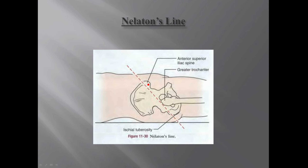Let's also discuss Bryant's triangle. Bryant's triangle is a right triangle drawn in the supine position. The hypotenuse extends from the ASIS to the tip of the greater trochanter. A perpendicular is drawn from the ASIS to the horizontal, and then the intersecting line forms the triangle. Bryant's triangle has the same significance as the other lines — it shows whether the head of the femur or the trochanter is displaced from its normal location, and can also indicate certain pathologies like Perthes' disease or fracture of the neck of the femur.